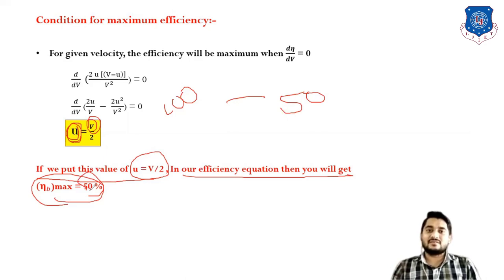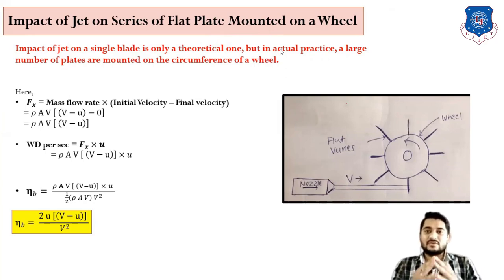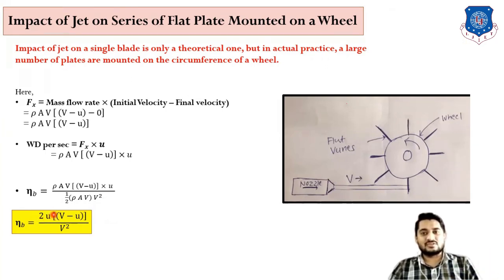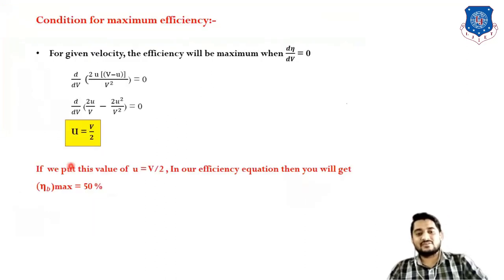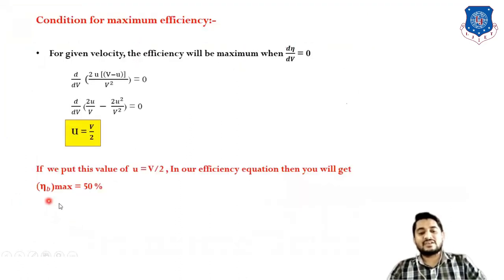To revise: for impact of jet on series of flat plates mounted on a wheel — first find force, from force find work done per second (power), from power find efficiency. The two parameters affecting efficiency are jet velocity and blade velocity. Since blade velocity is constant, differentiate with respect to jet velocity to get U = V/2 (blade velocity is half of jet velocity), giving maximum efficiency of 50%.